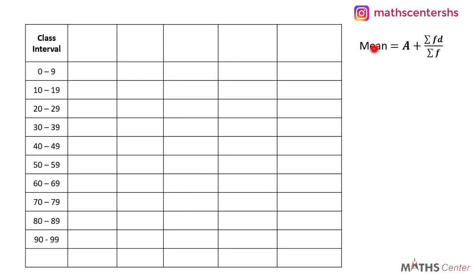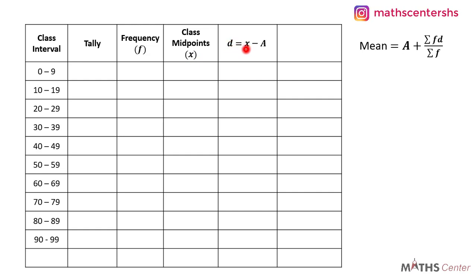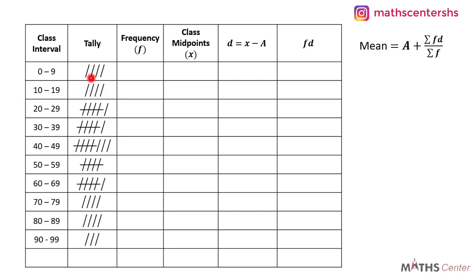We are going to find the mean using the assumed mean method. The formula is: assumed mean plus sigma fd divided by sigma f. We will have a table with six columns: class intervals, tally, frequency (f values), class midpoints (x values), deviation (d), and fd values. After completing the tally, the frequencies are obtained. Now let's find the class midpoints by adding the lower and upper class limits and dividing by 2.